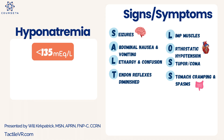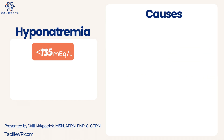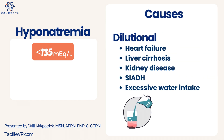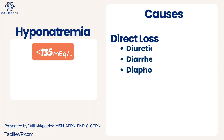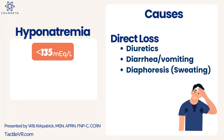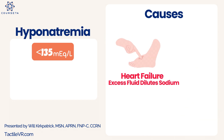For hyponatremia signs and symptoms, remember the mnemonic SALT LOSS: Seizures, Abdominal nausea and vomiting, Lethargy and confusion, Tendon reflexes diminished, Limp muscles, Orthostatic hypotension, Stupor/coma, and Stomach cramping and spasms. There are two types of causes: dilutional — a large amount of water in the vascular space dilutes sodium — and direct loss, such as from diuretics. Common conditions include heart failure, liver cirrhosis, and kidney disease.